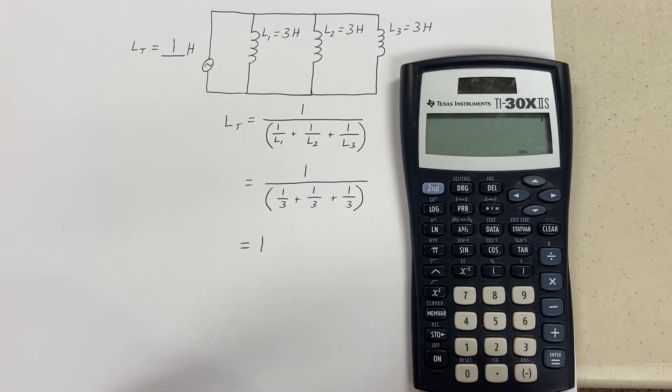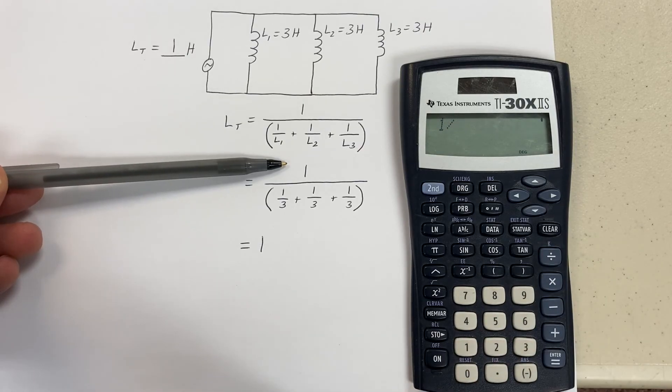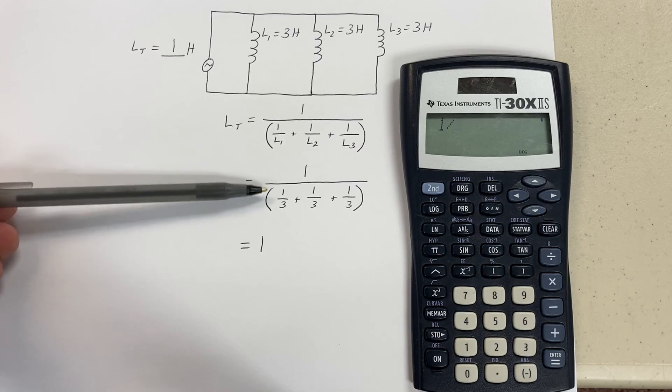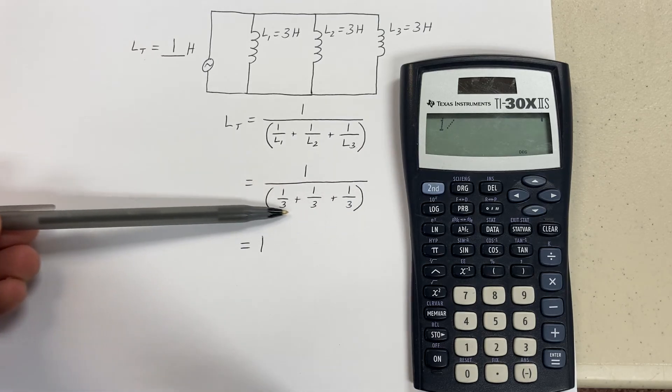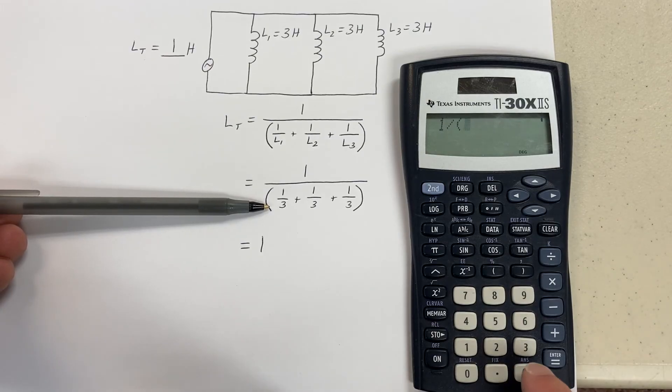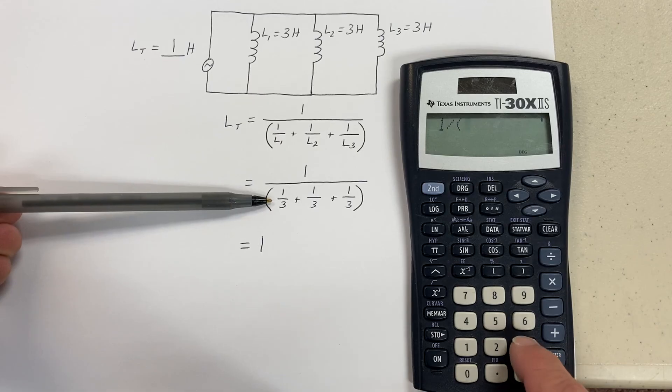Turn this on. We're going to take one divided by - and remember PEMDAS and all of that, the order of operations is important. So since we're dividing by a quantity, we need to put our parentheses here, open parentheses. And then how do I have one third? To add them all together, the easiest way is to go three inverse key.